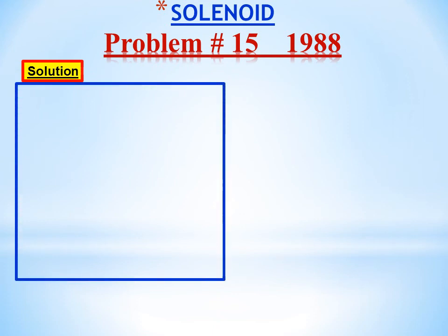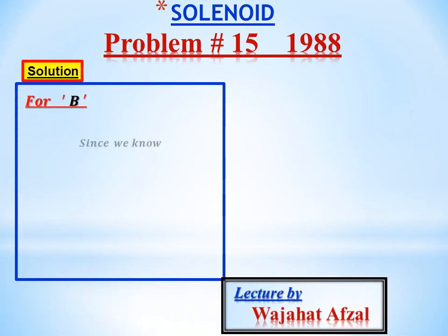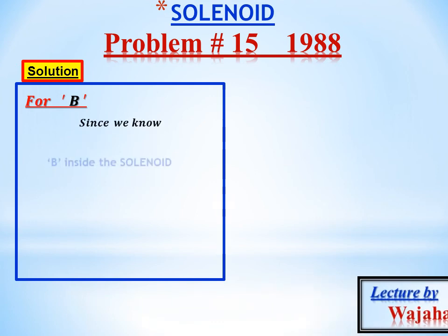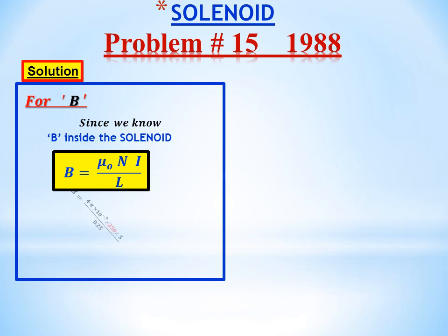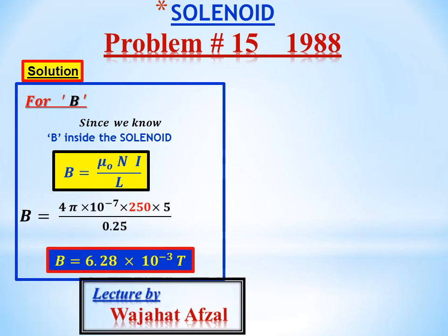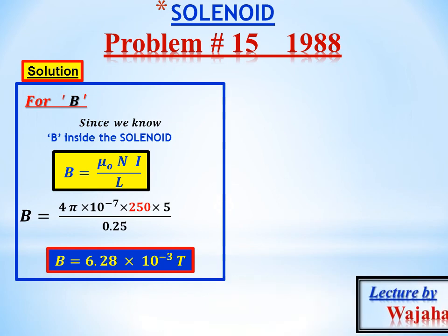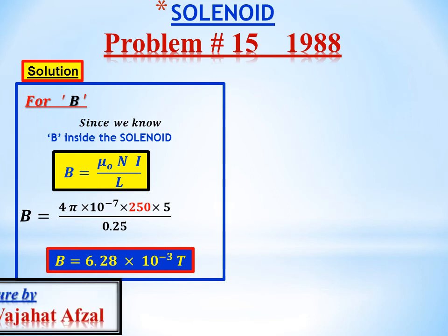In the solution, using the equation of B inside a solenoid — B = μ₀NI / L — by placing their values, the magnetic field of induction is 6.28 × 10⁻³ Tesla (or Weber per meter square).